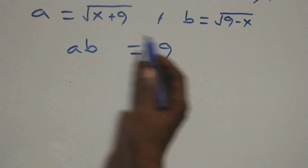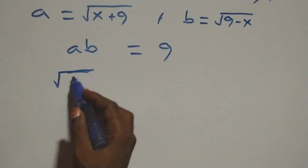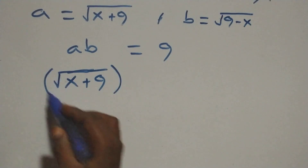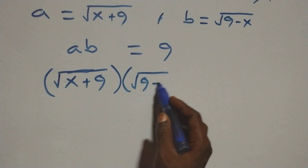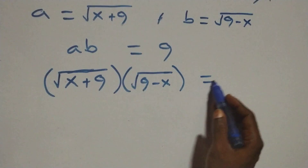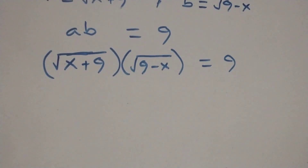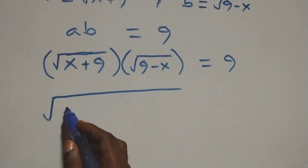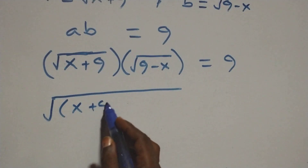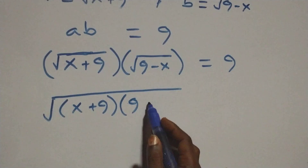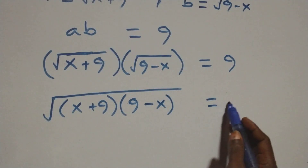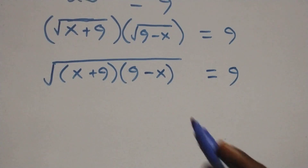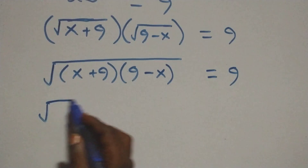When we substitute the values of a and b, this equation becomes: square root of (x plus nine) multiplied by square root of (nine minus x) equals 9. Since they are multiplied, we can bring them together under the same root: square root of (x plus nine)(nine minus x) equals 9.